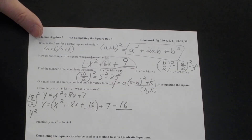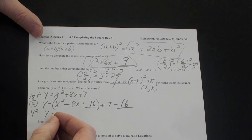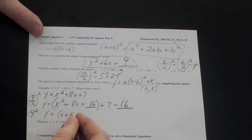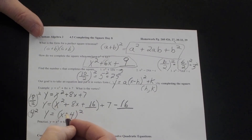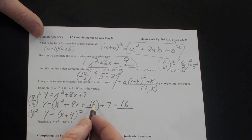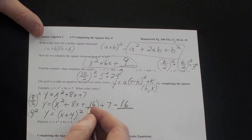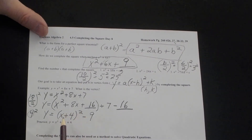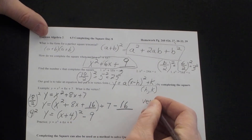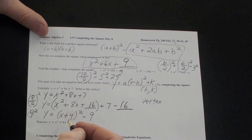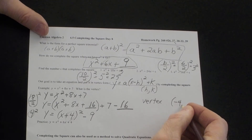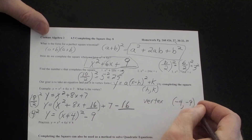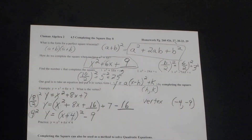I subtract 16 outside. Written as a square of a binomial, this becomes (x + 4) squared — because x plus 4 times x plus 4 gives x squared plus 8x plus 16. Outside we have 7 minus 16, which is negative 9. So our vertex: the x-coordinate comes from the h value, and we change that sign — that's negative 4. The y-coordinate is negative 9. The vertex of this parabola is at (−4, −9).